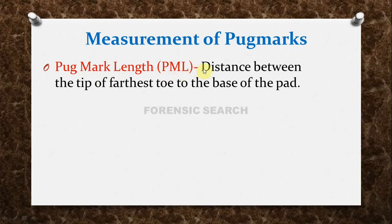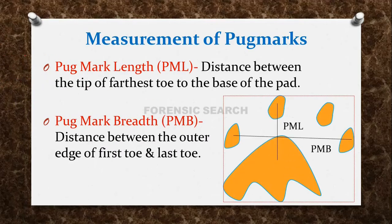What is Pugmark Length? The distance between the tip of the farthest toe to the base of the pad is known as Pugmark Length (PML). The next terminology is Pugmark Breadth, that is PMB. What is PMB? The distance between the outer edge of the first toe and the last toe is known as Pugmark Breadth (PMB). We can see it this way: Pugmark Breadth is the distance from the outer edge of the first toe to the outer edge of the last toe.